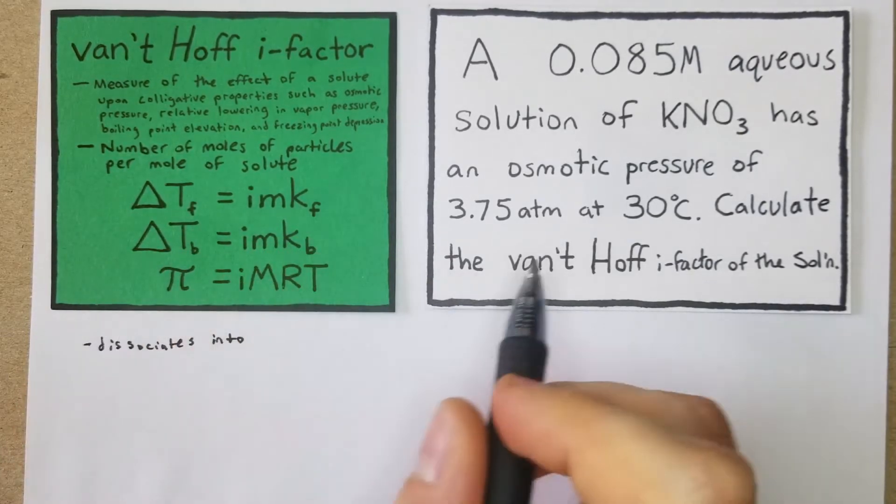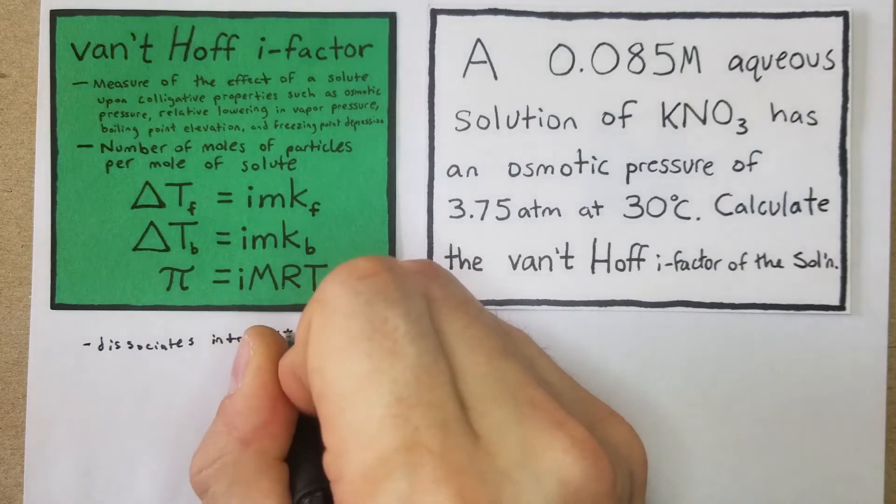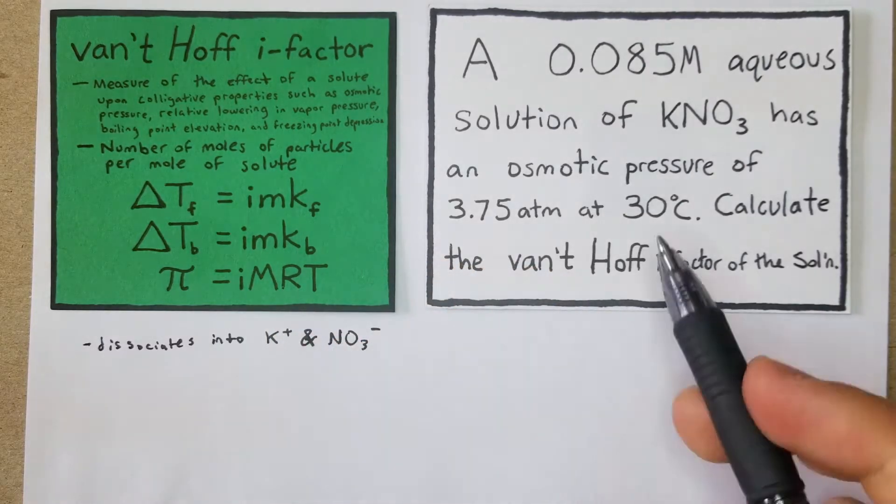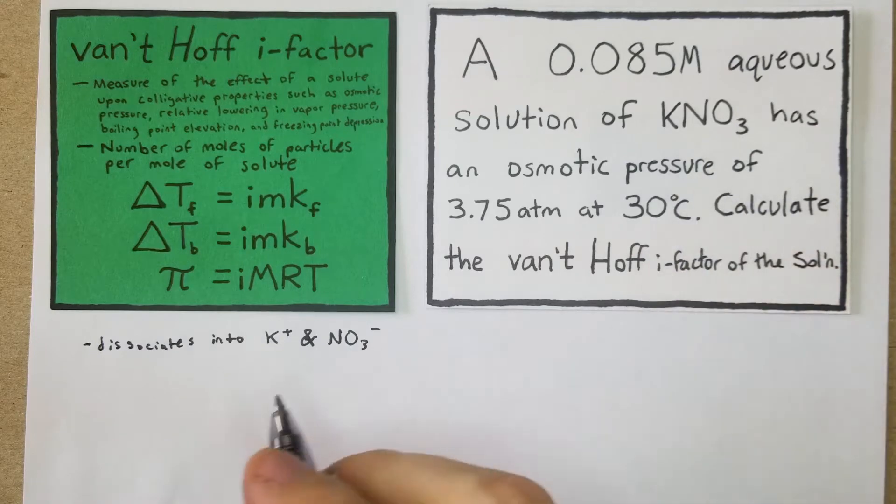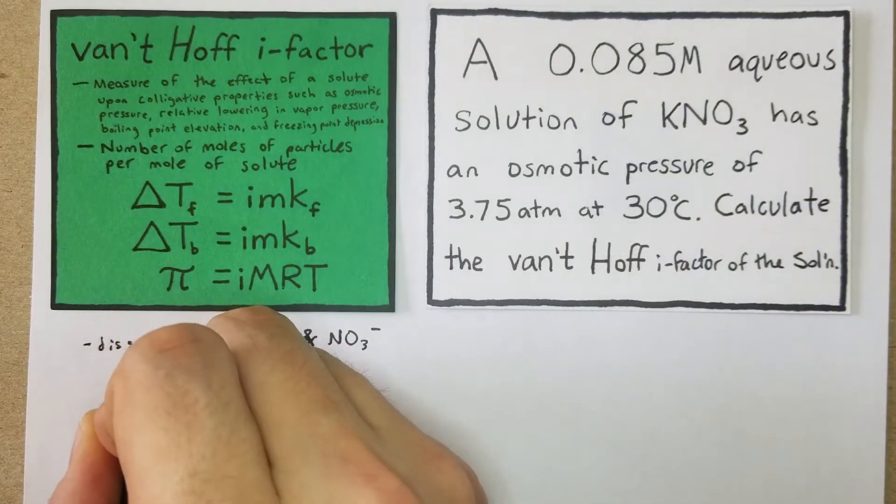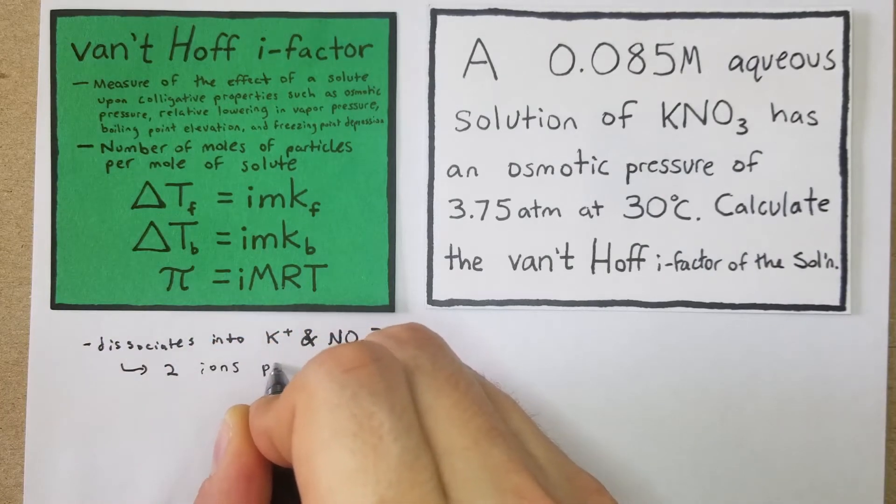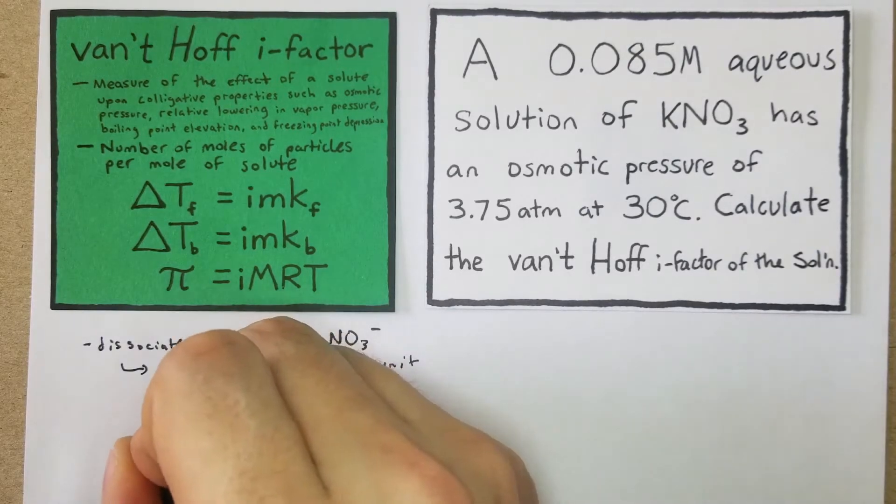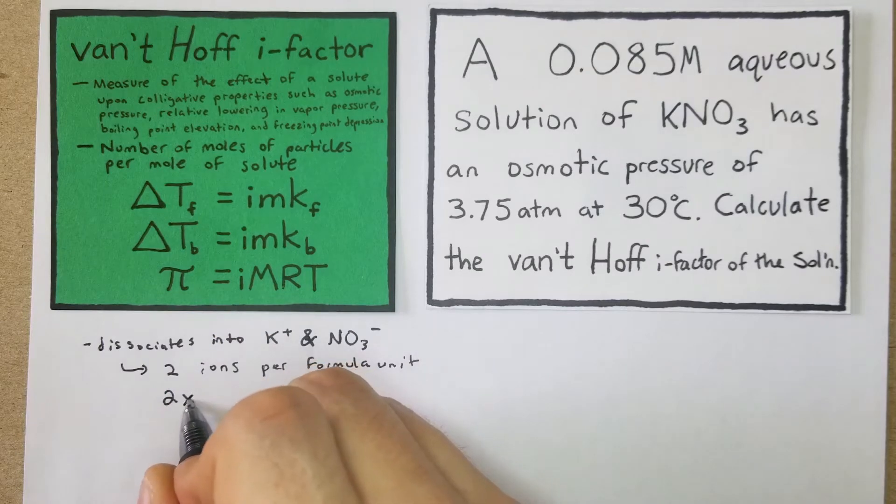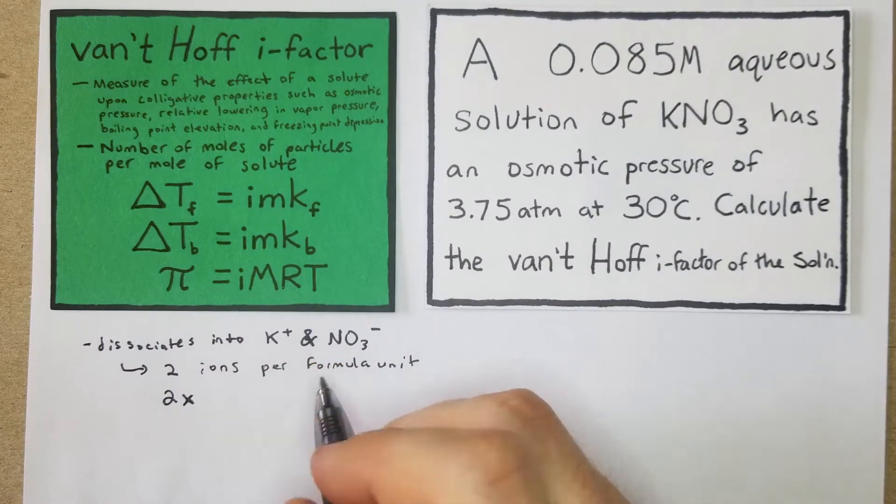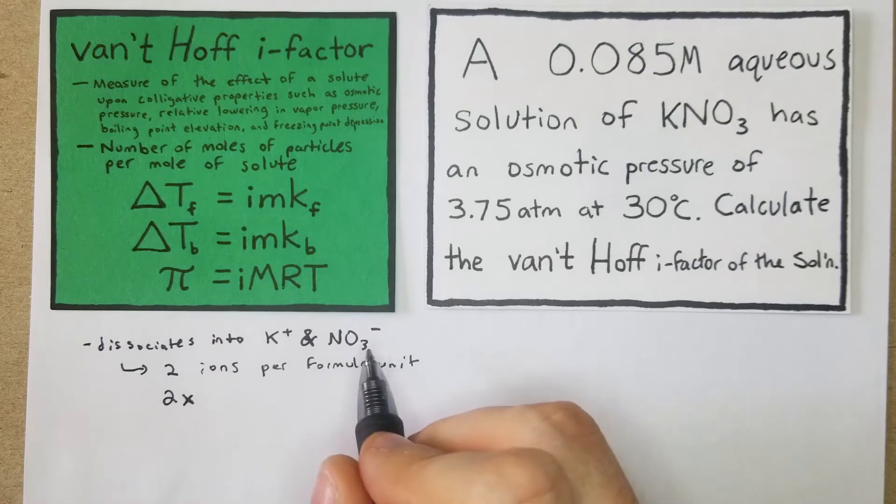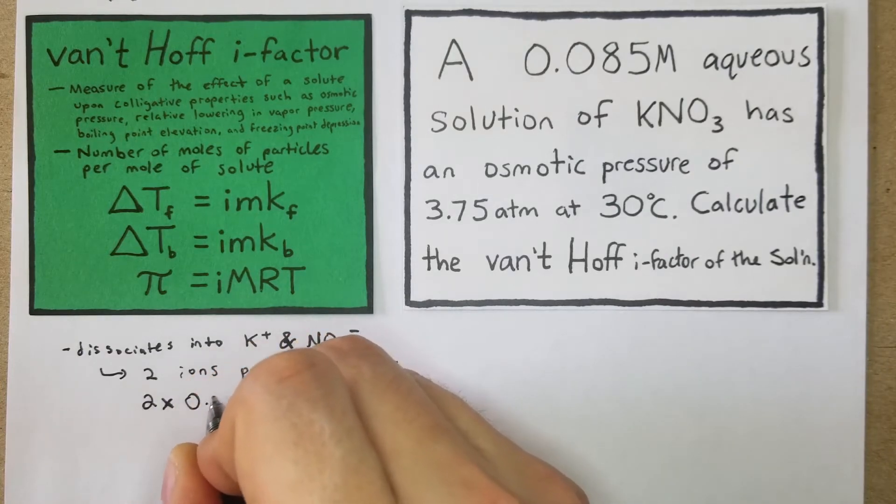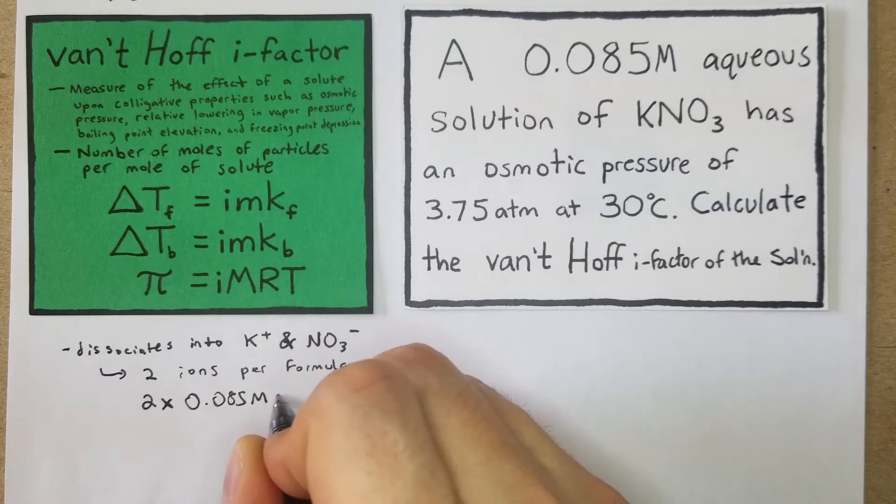What we're going to look at is basically what we have, the KNO3, and what it dissociates into. So we have our potassium and our KNO3 minus, and you can tell just by the formula what the charges are going to be once you dissociate them. That's two ions per formula unit, so that would be two times 0.085 molar, which is going to be 0.17 molar.